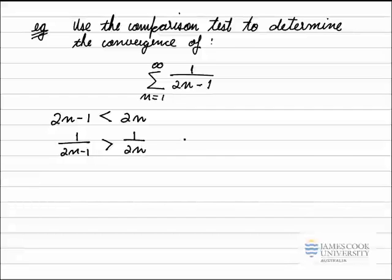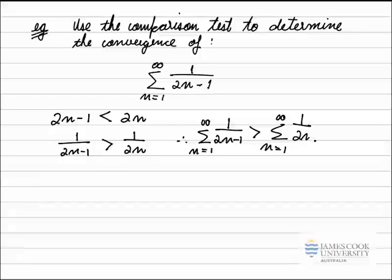And so what that means is we now put both of these terms back into a series, and we see that the sum from n equals 1 to infinity of 1 over 2n minus 1 must be larger than the sum from n equals 1 to infinity of 1 over 2n.